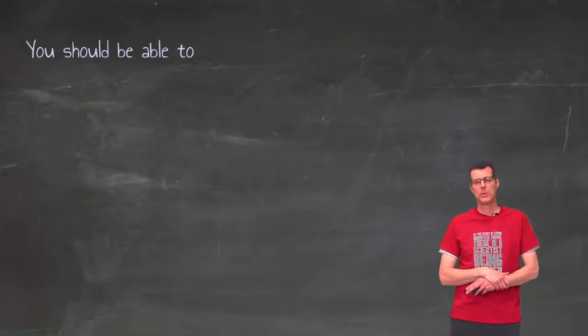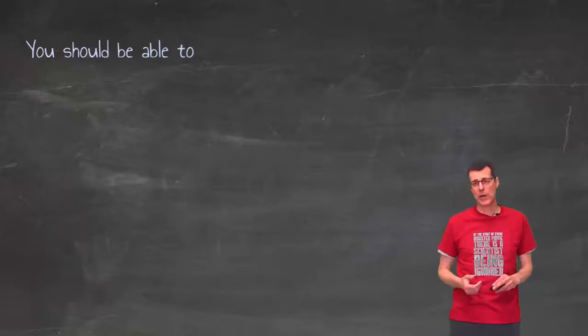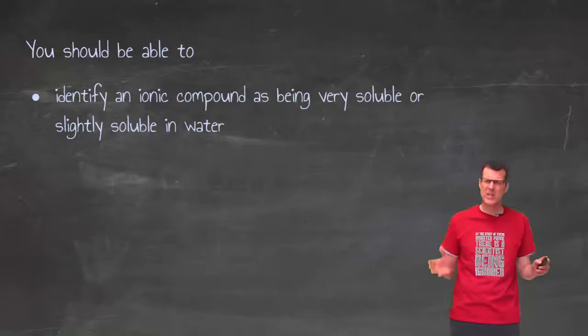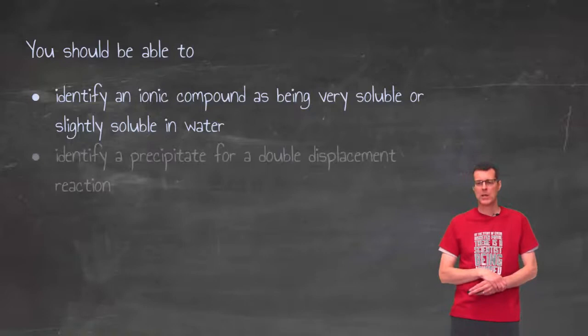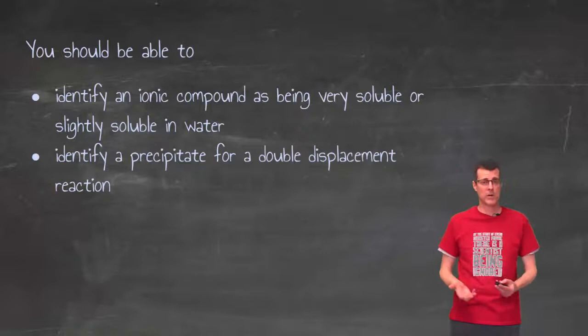That wraps up double displacement reactions and solubility. Other than getting a whole lot more practice with the solubility table, you should be able to read that table. I've got a couple of different versions. We'll find one that works best, but we'll probably stick with the one that's in the textbook. And you should be able to identify a compound on its own as where it falls in the solubility table, and also identify precipitate in a double displacement reaction. And after that, we'll talk to you another time.